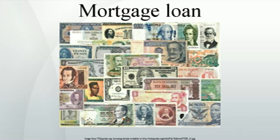According to Anglo-American property law, a mortgage occurs when an owner, usually of a fee simple interest in realty, pledges his or her interest as security or collateral for a loan. Therefore, a mortgage is an encumbrance — a limitation on the right to the property, just as an easement would be — but because most mortgages occur as a condition for new loan money, the word mortgage has become the generic term for a loan secured by such real property.